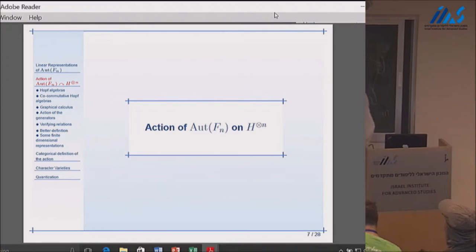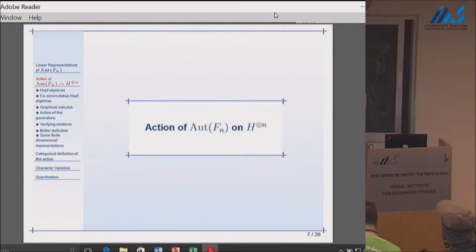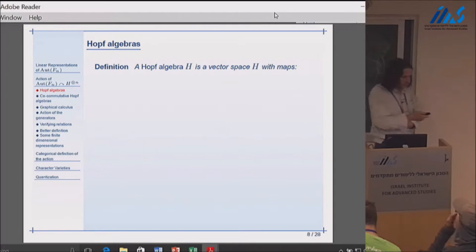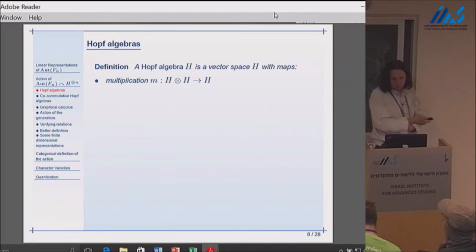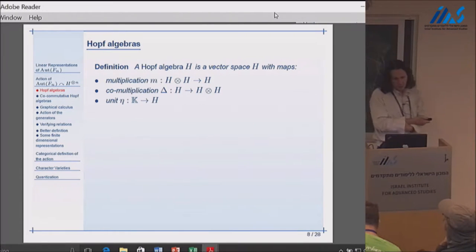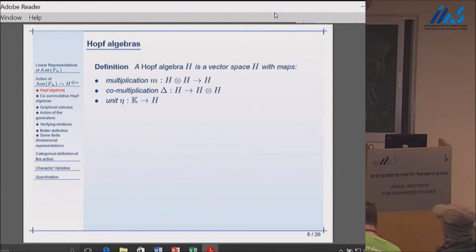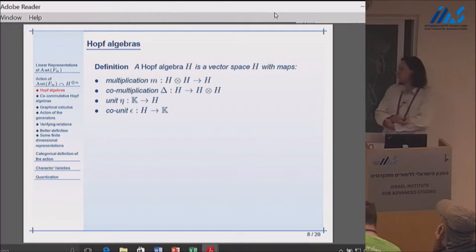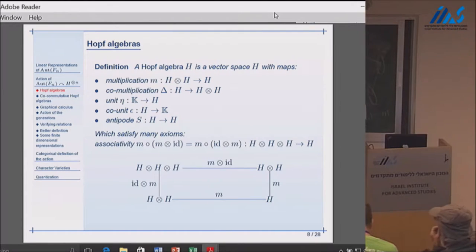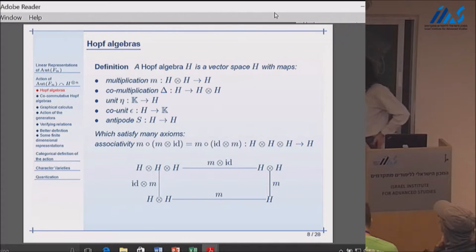Let me describe what this action is and how we found it. There are several ways to describe it, and I'm going to start with probably the wrong way—but this is how we originally discovered it. First, a Hopf algebra is an algebra with additional structure: a vector space with a bunch of maps. You need the multiplication, which turns it into an algebra, and you need the co-multiplication, which says the dual has an algebra structure. Then you have extra maps like unit, co-unit, and antipode, satisfying many axioms. One obvious axiom is that the multiplication must be associative.